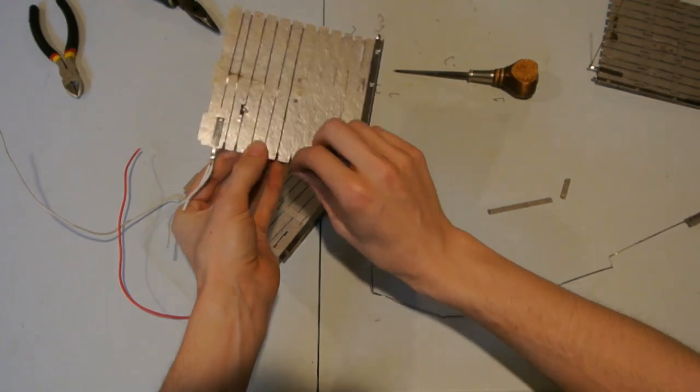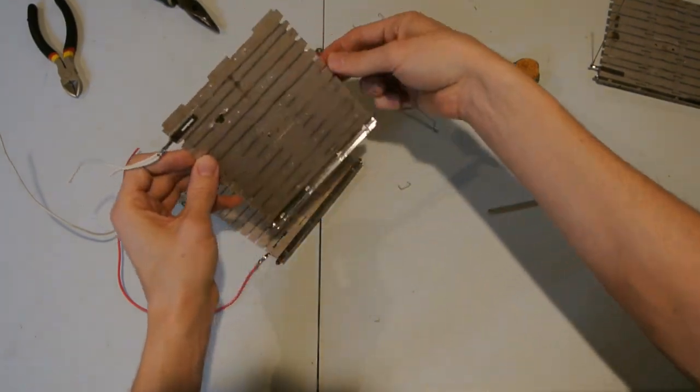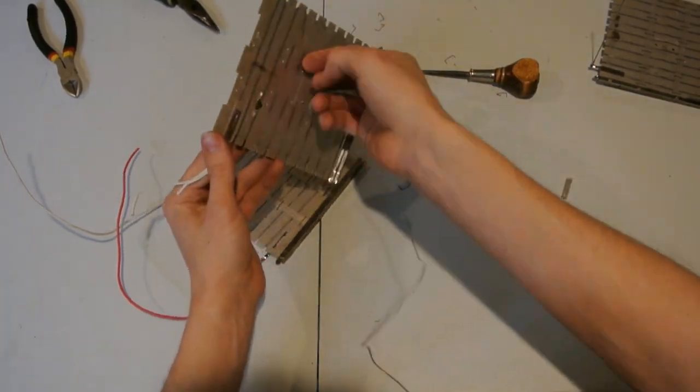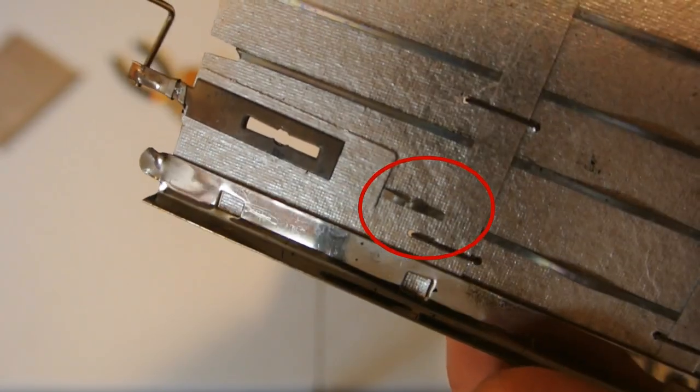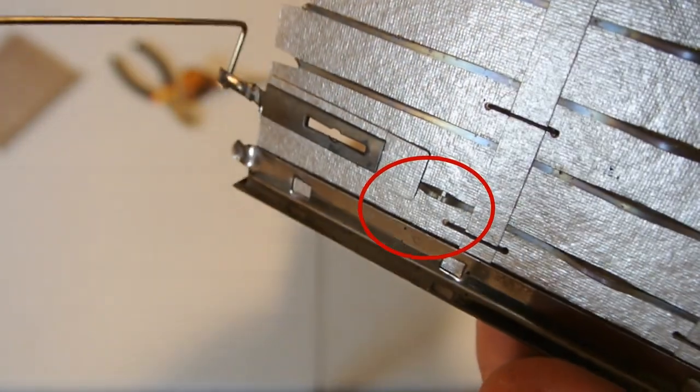Anyhow, after I had taken the toaster apart, I unwound some of the heating coils from their mica insulation boards. I also actually found the busted section of nichrome wire that killed the whole toaster. Bad toaster.